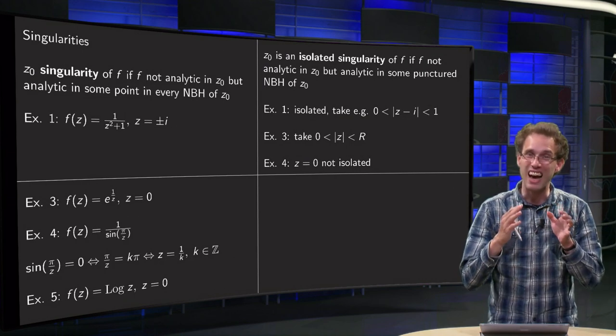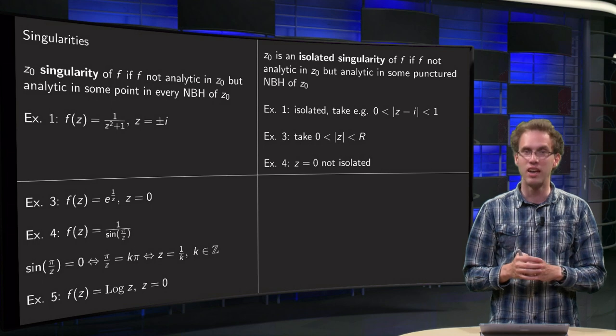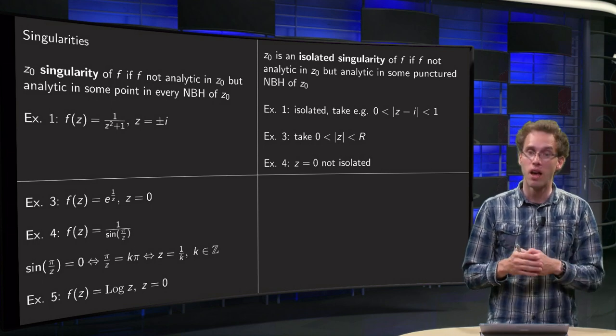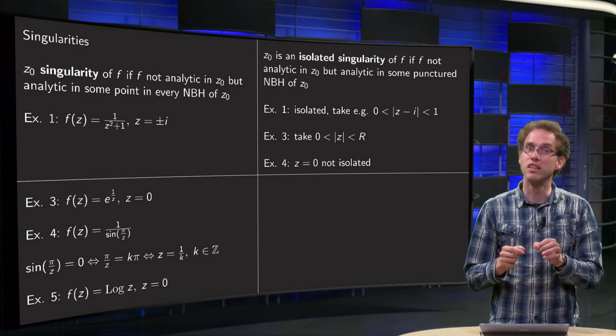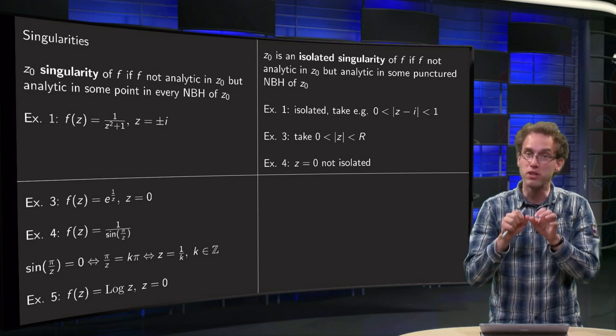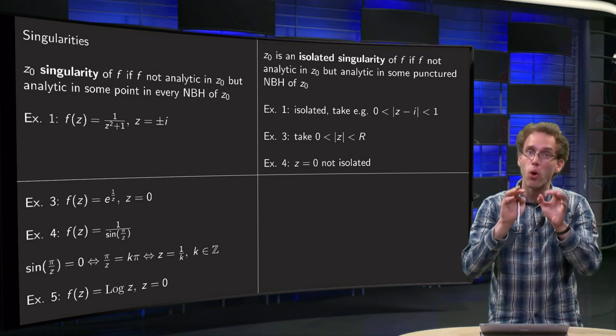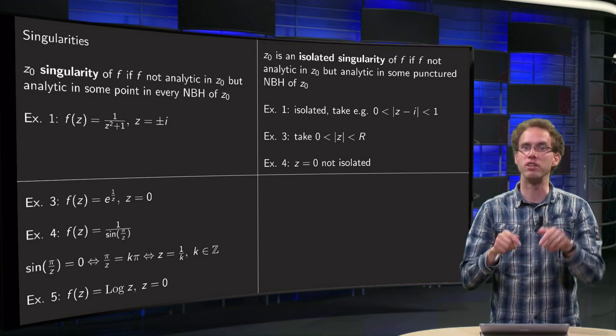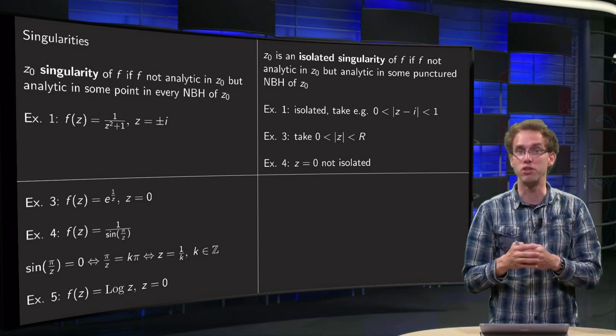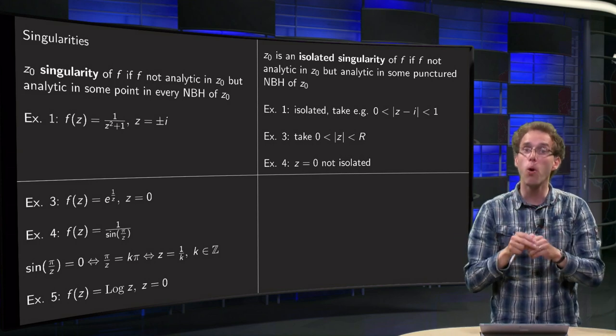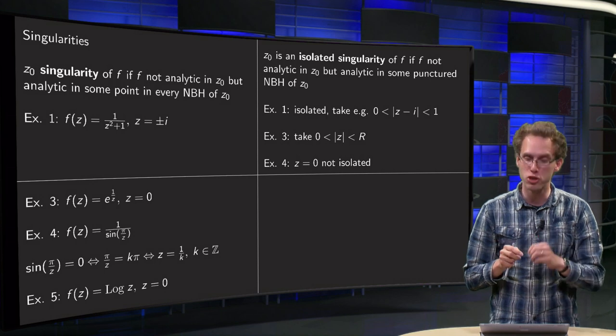Now what is an isolated singularity? It is a bit stronger than singularity, of course, singularity, but it is a bit stronger in the sense that, now you have to be able to find some punctured neighborhood of z₀, in which all points are nice and analytic, so just finding one point in the vicinity of your z₀ is not enough, you now have to find a small disk around it, such that in the interior all points are analytic, so that is a bit stronger.